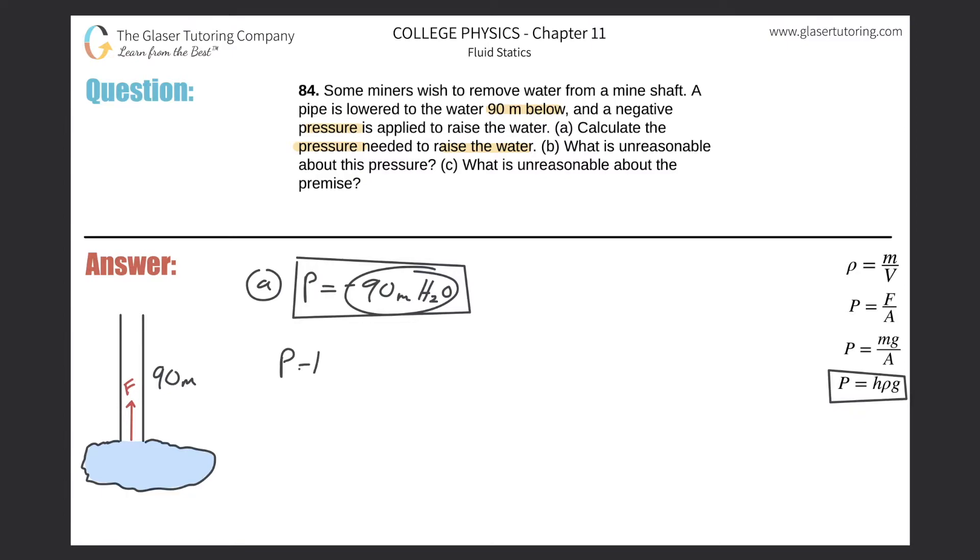The pressure will be equal to the height of a certain fluid multiplied by the density of that fluid multiplied by gravity. Here we're talking about water, so the height of the water we want to raise is 90 meters.